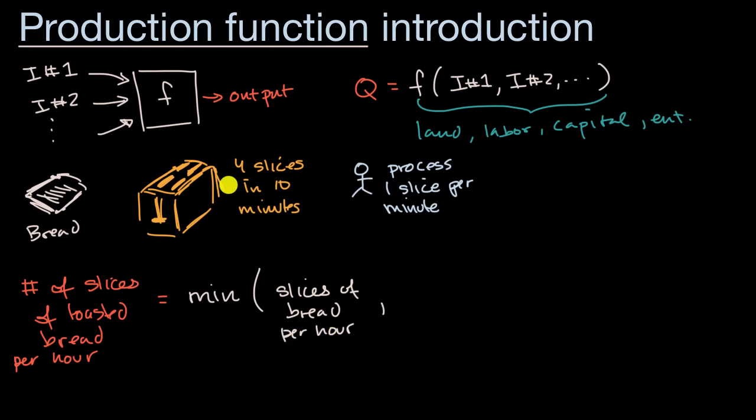Now our other input, how much toast can one toaster toast in one hour? Well, if they do four slices in 10 minutes, we'll multiply that times six to get to an hour. That's going to be 24 slices per hour. So we could do 24 times the number of toasters.